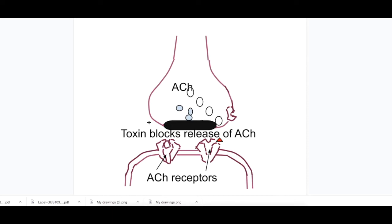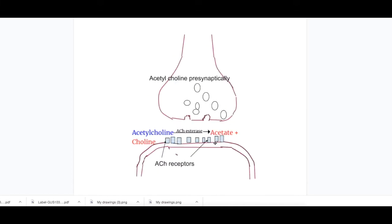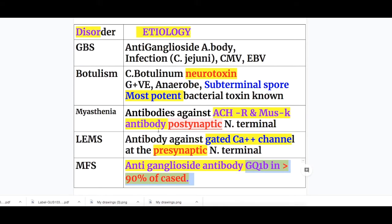In Botulism, the toxin blocks the release of acetylcholine from the presynaptic terminal. Similarly, in LEMS antibodies against voltage-gated calcium channels and in Miller-Fisher syndrome GQ1B antibodies also block presynaptic release of acetylcholine. Myasthenia gravis is unique in that the defect is post-synaptic, where anti-acetylcholine receptor and MuSK antibodies destroy the receptors. Guillain-Barré syndrome is the only one affecting peripheral nerves, damaging the myelin sheath and axon.